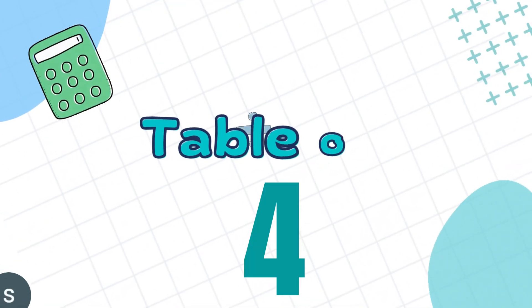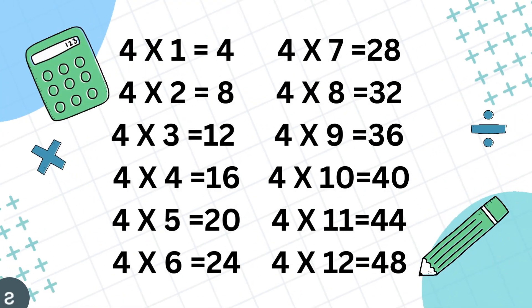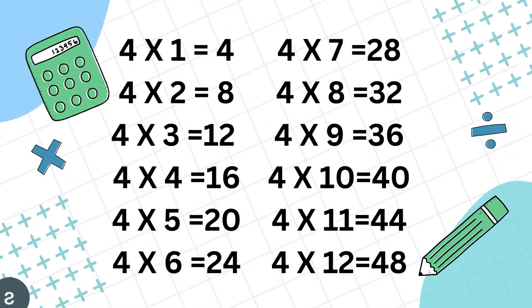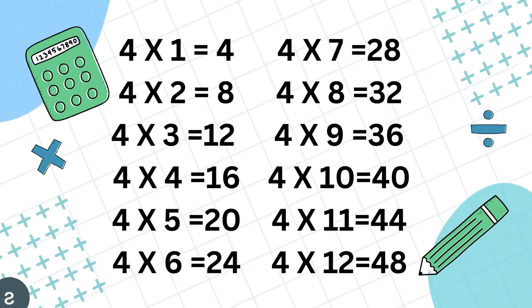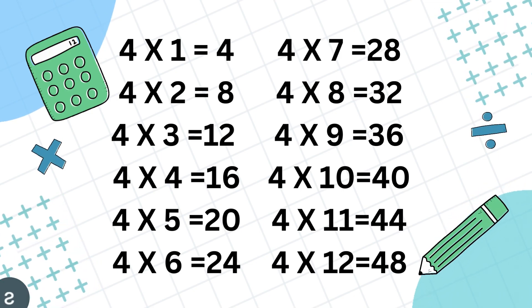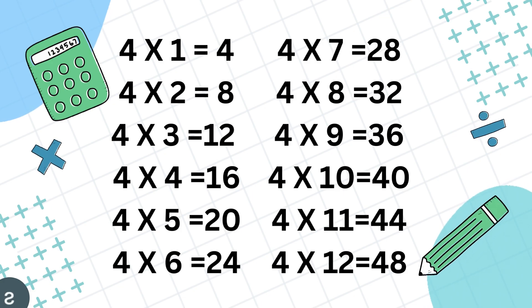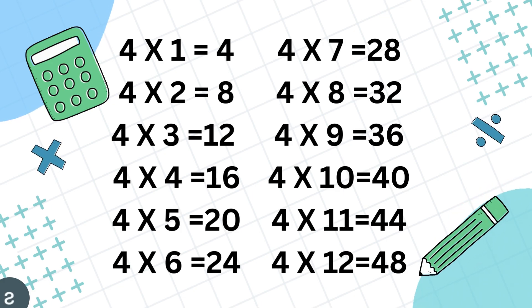Table of 4. 4 1's are 4, 4 2's are 8, 4 3's are 12, 4 4's are 16, 4 5's are 20, 4 6's are 24.